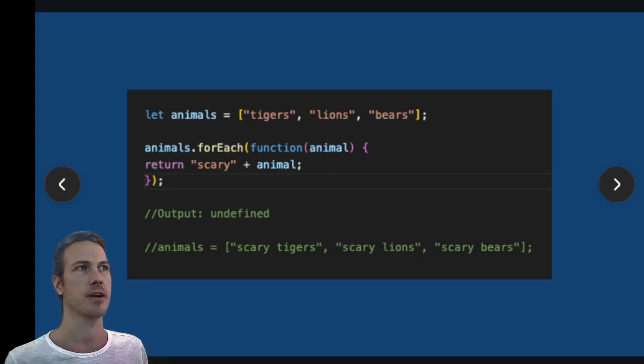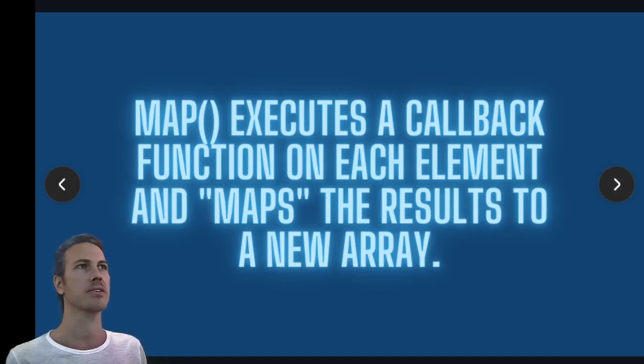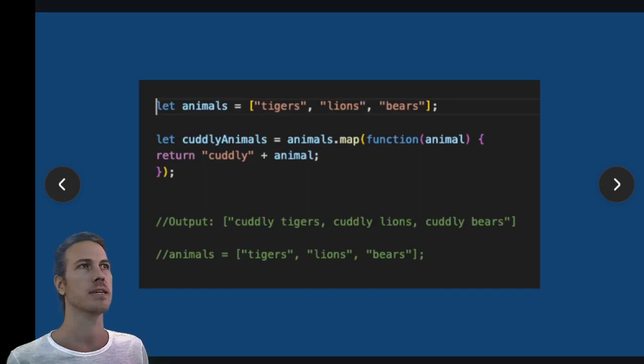Whereas map executes a callback function on each element and then maps the results onto a new array. So again, here we have an array called animals and we're running map on it and adding 'cuddly' to each of the elements. So the output is going to create a new array that has cuddly tigers, cuddly lions, and cuddly bears, but the original animals array that we took in still exists in its original form.